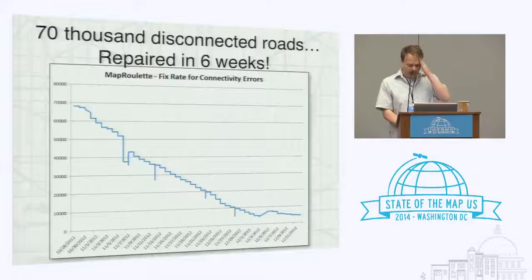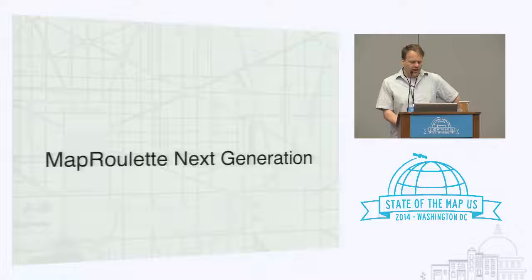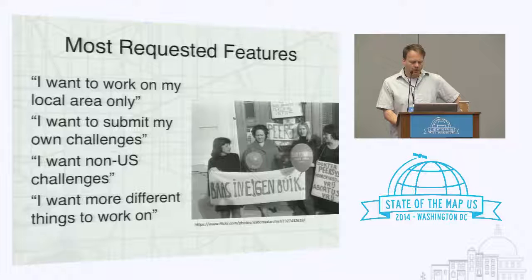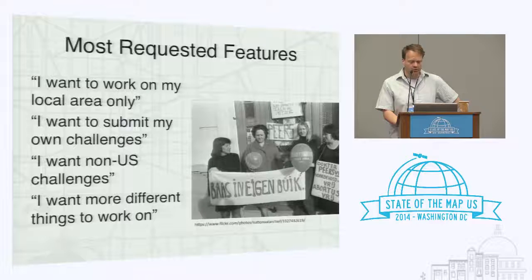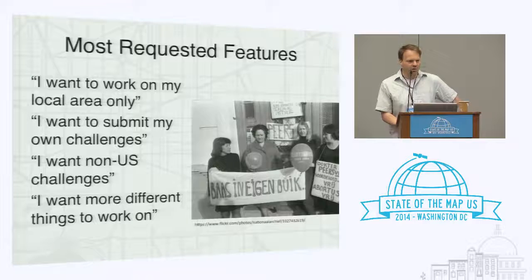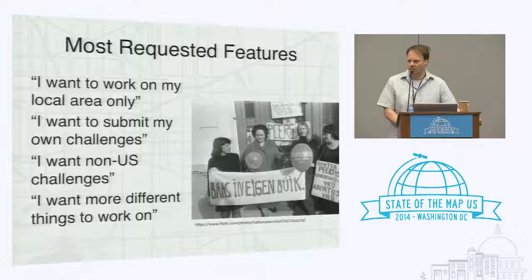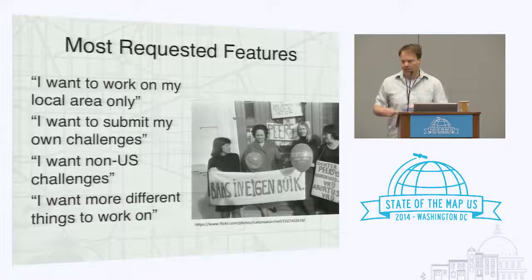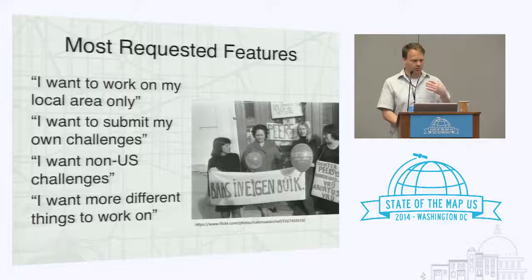Then things fell a little quiet as Serge and I went on to work on the new generation. We got a lot of feedback on MapRoulette: why can't we work in a specific area — I don't care about working in Nebraska, I only want to work around D.C. because that's where I live. That was the single most requested feature. People also wanted to submit their own challenges, wanted non-US challenges, and wanted more different things to work on at the same time.